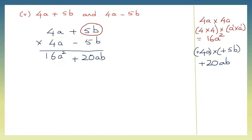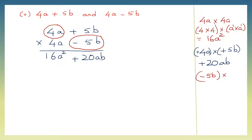Now we're taking minus 5b and multiplying it by 4a. So minus 5b into plus 4a. Multiply the signs first: minus into plus is minus. Numbers: 5 fours are 20. Literals: b into a is ba. So minus 20ab or minus 20ab — it's the same. We'll put it in the same column: minus 20ab.